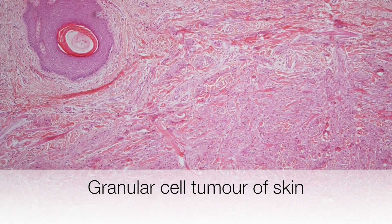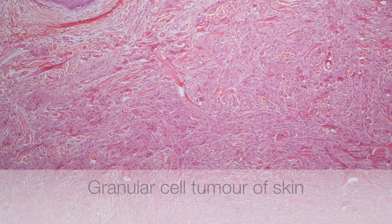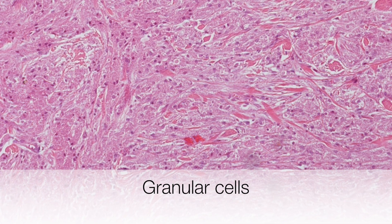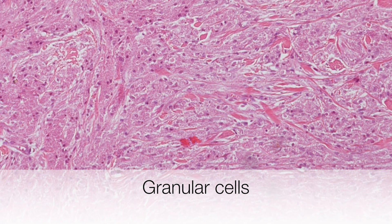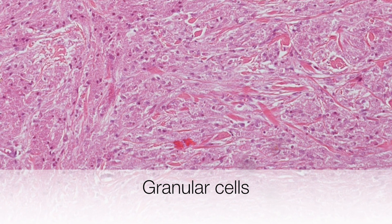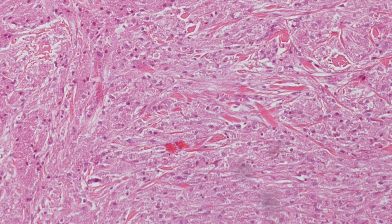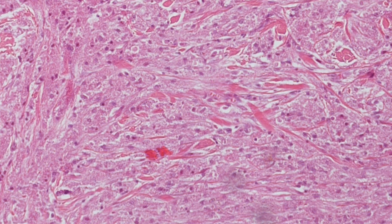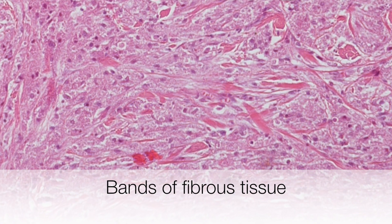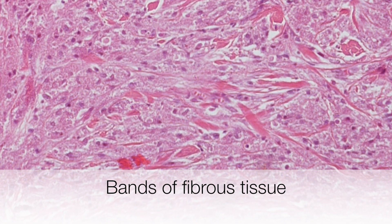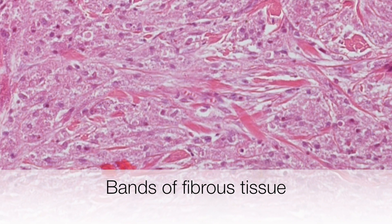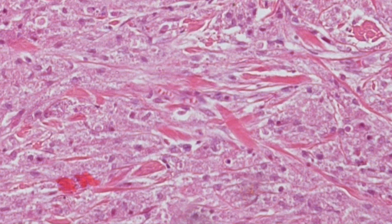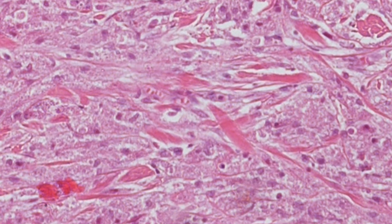This is a granular cell tumour arising in the skin. At higher magnification, the granular nature of the cytoplasm is revealed, and between the granular cells there are streaks of dark pink staining tissue — these are bands of fibrous tissue, typical of the fibrous stroma of granular cell tumours. This is why on palpation granular cell tumours feel hard.